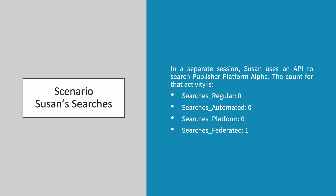In a separate session, Susan uses an API to search publisher platform Alpha. The count for that activity is 0 searches regular, 0 searches automated, 1 searches platform and 1 searches federated.